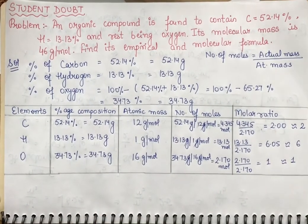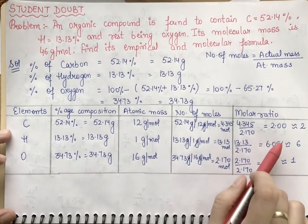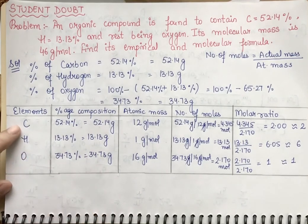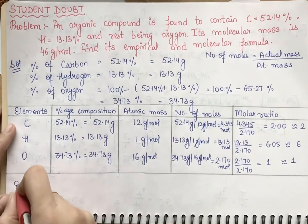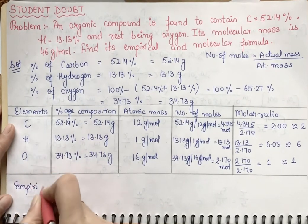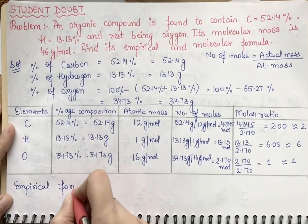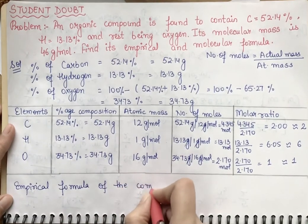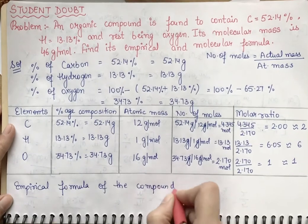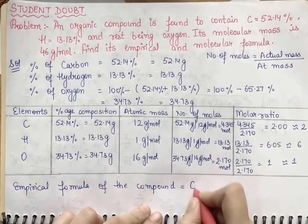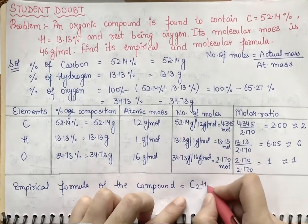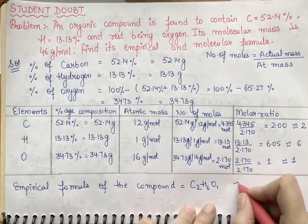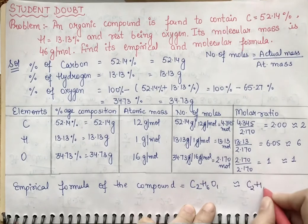Now we find the empirical formula, which gives the elements in the simplest whole number ratio. Carbon is 2, hydrogen is 6, and oxygen is 1. So the empirical formula is C₂H₆O.